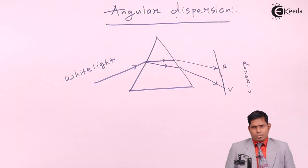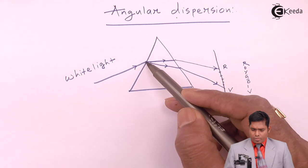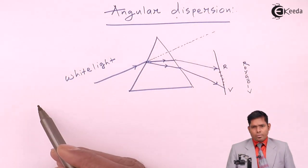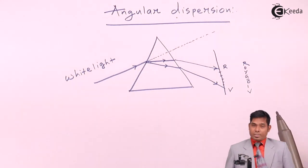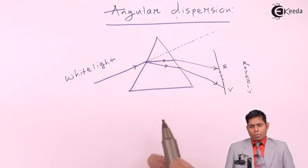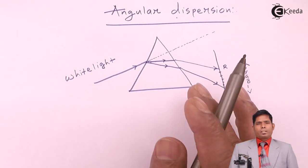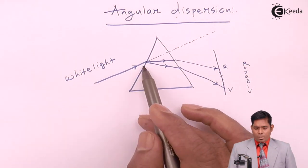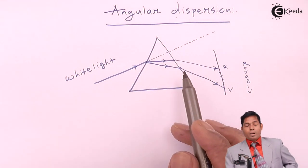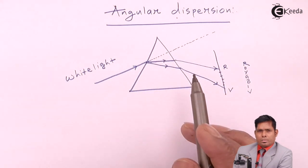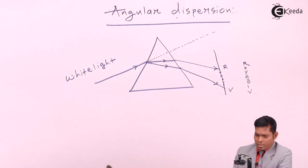Now, what is angular dispersion? It means by what angle the different rays are turned or bent from the original direction when light passes through the prism and comes out. So in the final journey of the different colors, when they are separated within the prism and come out in air, by what angle the different colors are deviated from the initial direction — this is the angle of deviation of individual colors.